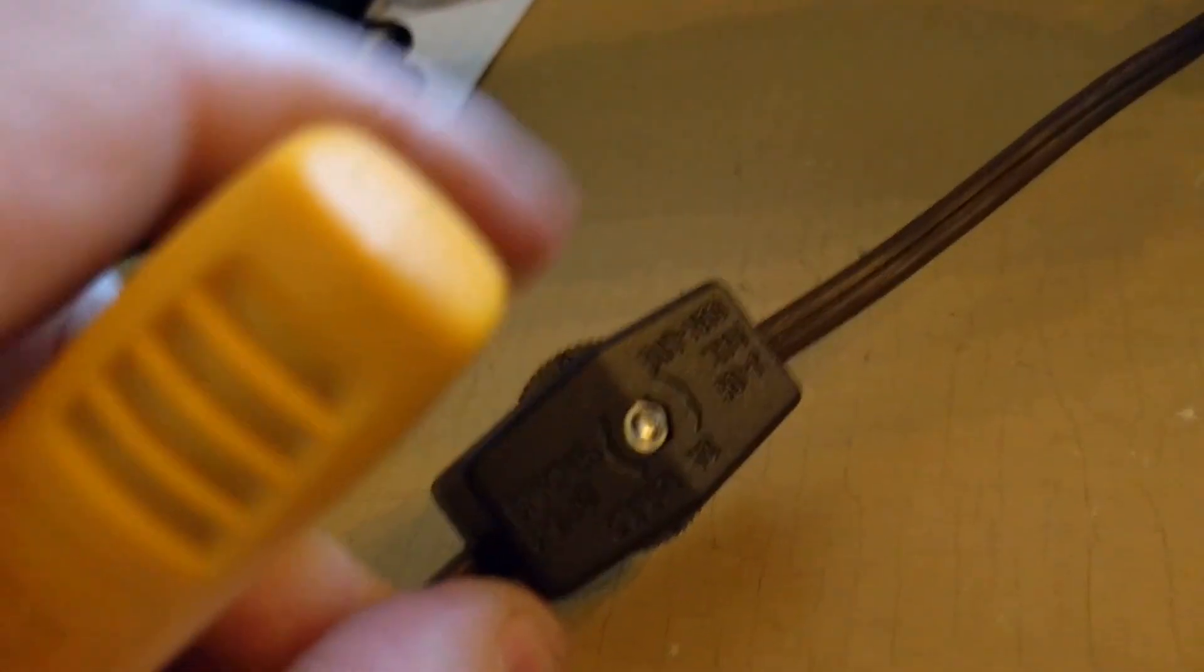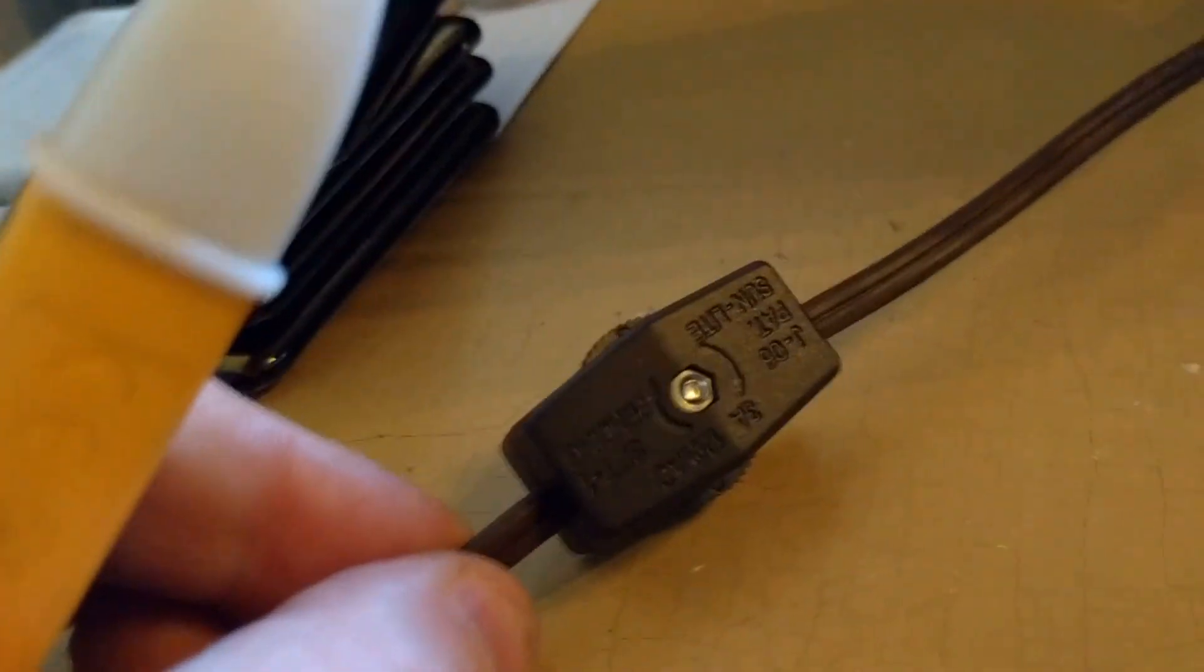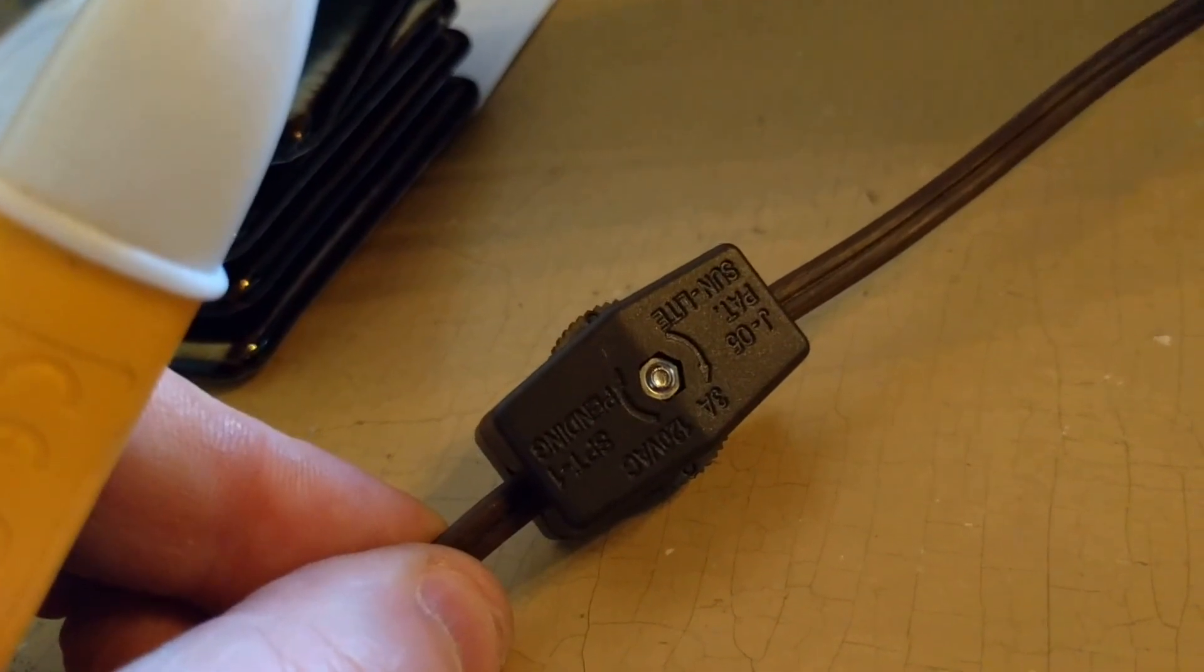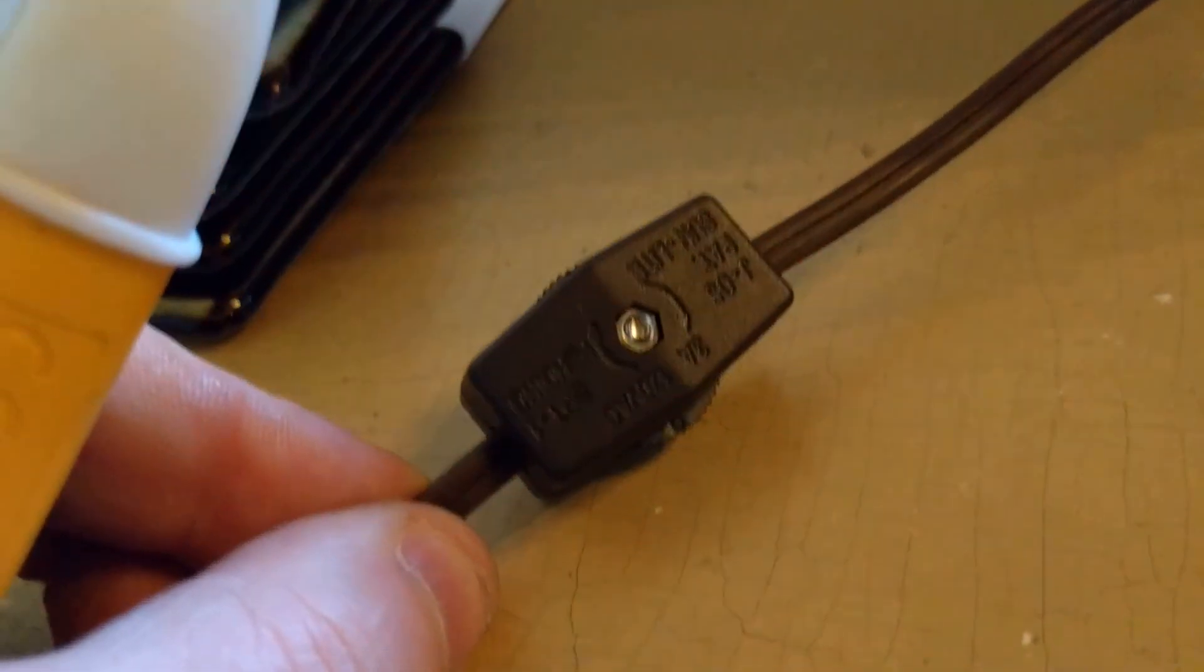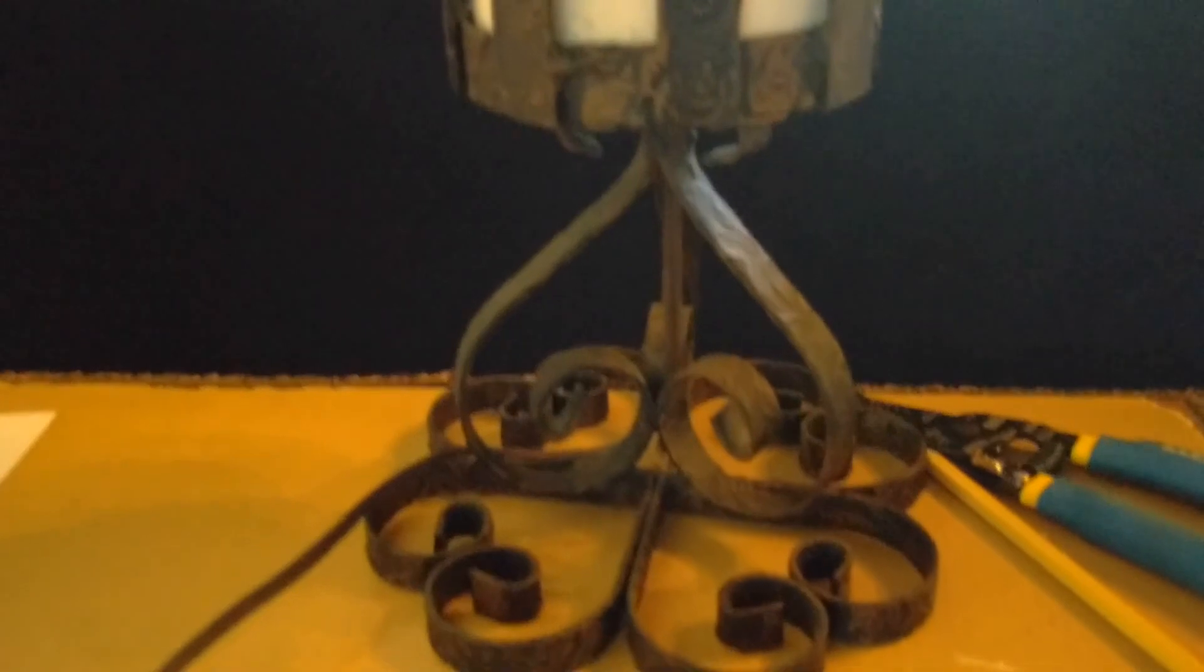So the trick is to make sure that this switch always switches the hot lead. And the hot lead—that is the skinny blade in the socket, the skinny blade on the plug—that hot lead always has to be the thing that gets switched first, that is closest to the source. So that way, when you turn it off, it's only energized up to the switch and not throughout the lamp or the appliance or the toaster or whatever.